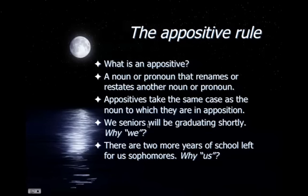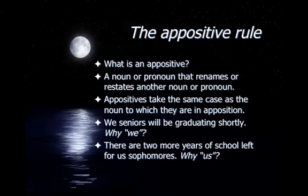For example: 'We seniors will be graduating shortly.' Block out 'we' — seniors is a subject, so you choose we, which is nominative case, because nominative cases are subjects. Conversely, 'There are two more years of school left for us sophomores.' Block out 'us' — sophomores is the object of the preposition 'for,' so you need the objective case pronoun. That's why it's 'us sophomores,' not 'we sophomores.' The pronoun must match the function of the noun it renames.